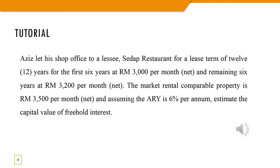To make sure you understand today's lesson, please answer this tutorial question. A property is let for a term of 12 years. The rental will be different across two periods: the first 6 years, the rental is RM3,000 per month net; the next 6 years, the rental is RM3,200 per month net. The market rental comparable is RM3,500 per month net, and the ARY is 6% per annum. Estimate the capital value of this freehold interest. Don't forget to submit your answer. Good luck!